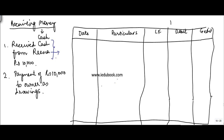Received cash from Rena — Rena owed certain money to the business. The reason is not given, but what is told is that we have received cash. Cash is an asset, and receipt of an asset is debited. So you debit cash account by 10,000.